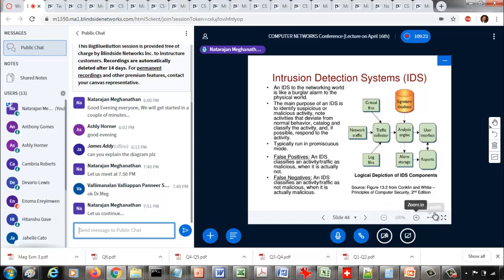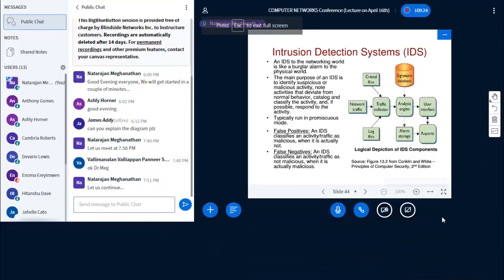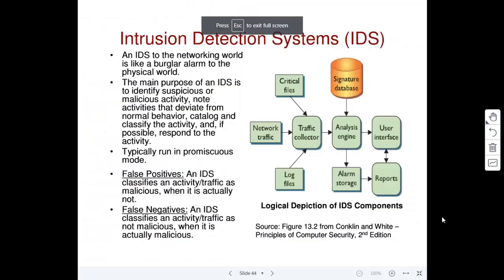The last thing we are going to look at is what is called an intrusion detection system, or IDS. Like a firewall, an IDS is also run on a dedicated computer. It is typically run in promiscuous mode, in the sense that nobody else in the network will be able to see its presence.